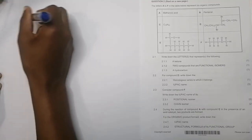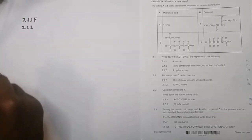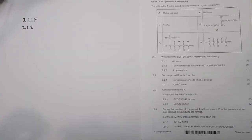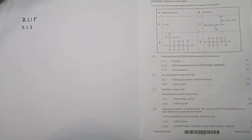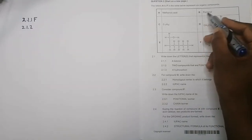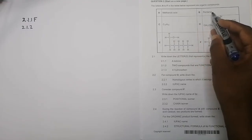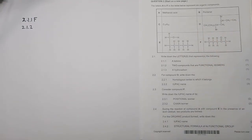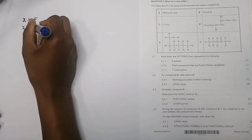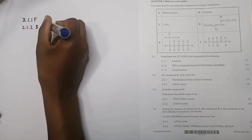For 2.1.2, they say two compounds that are functional isomers. Remember, we've got two sets of functional isomers: carboxylic acids are functional isomers of esters, and ketones and aldehydes are functional isomers of each other. So looking at that, I've got B which is pentanal — an aldehyde — and F which is a ketone, both with five carbons. So the answer is B and F.